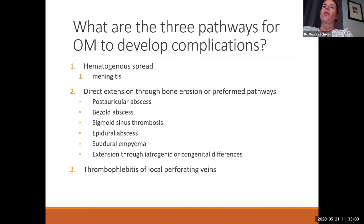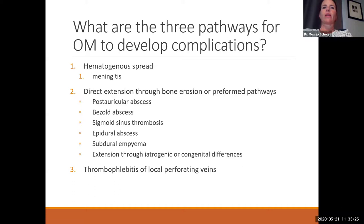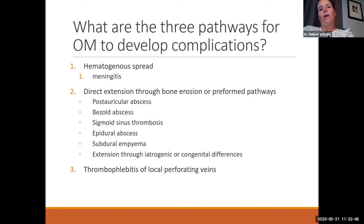There are three pathways for otitis media complications: hematogenous spread (which can cause meningitis); direct extension through bone erosion or preformed/congenital pathways (leading to abscesses like postauricular, Bezold's, sigmoid sinus thrombosis, epidural abscesses, subdural empyemas); and thrombophlebitis through local perforating diploic veins through the skull.